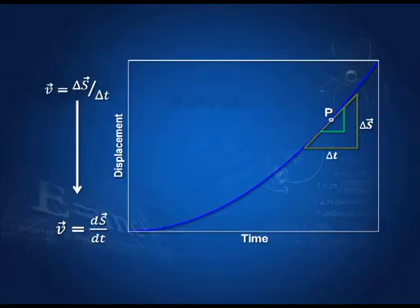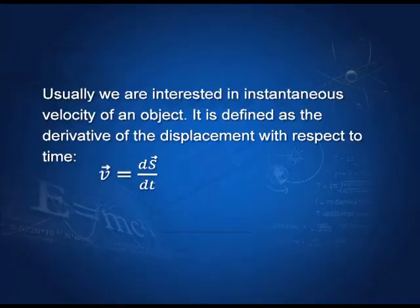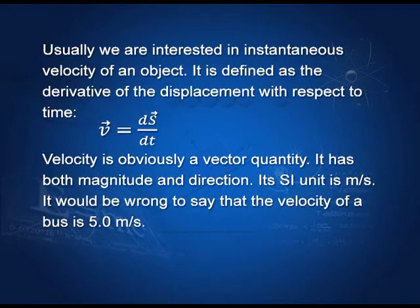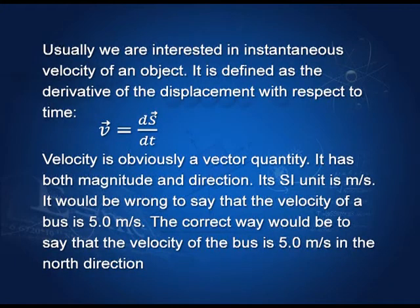If I want to find the instantaneous velocity at any point, I simply take the derivative of S at that point: V equals ds/dt. About derivatives, I will tell you in later lectures. Usually we are interested in instantaneous velocity, and then we get V equals ds/dt. Velocity is a vector because both sides are vectors. Therefore, it would be wrong to say the velocity of a bus is 5.0 meters per second. The correct way would be to say the velocity of the bus is 5.0 meters per second in the north direction. Remember, a vector needs both magnitude and direction for its description.